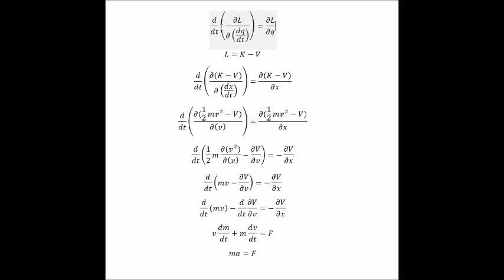Without deriving it, this is the Euler-Lagrange equation. It basically says that the time derivative of this partial derivative of L with respect to the derivative of Q over time is equal to partial L over partial Q. This looks complicated, but it's not. Q is a generalized coordinate — the easiest way to think of it is Q could be position. It doesn't have to be position; you could also use an angle like theta. So Q is your generalized coordinate, something like your position.